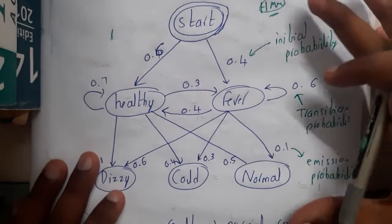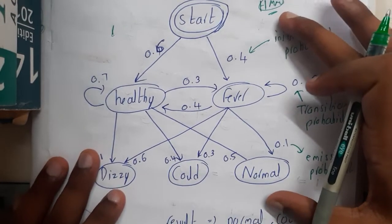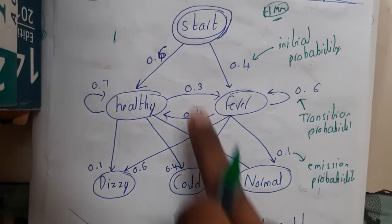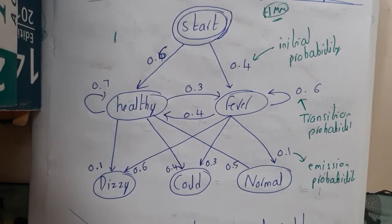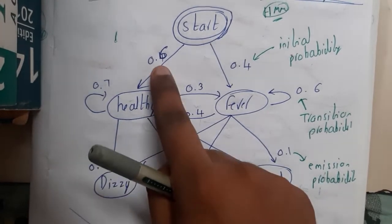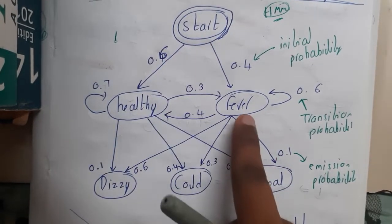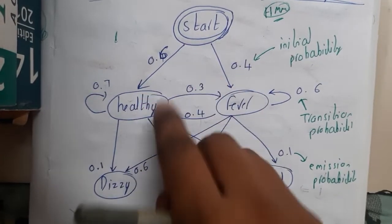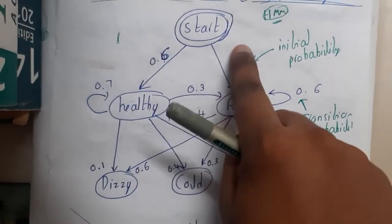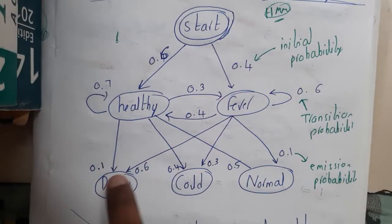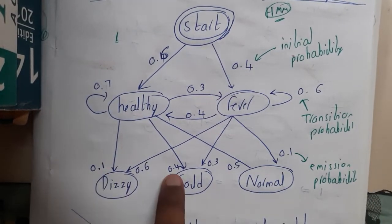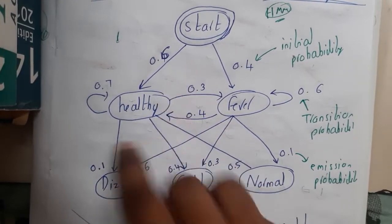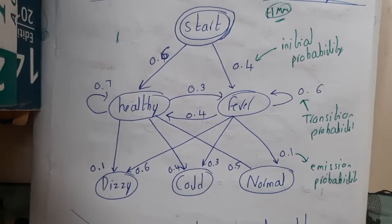They will give you a flow chart — you can call it a state chart diagram. It will have some probabilities. From Start to Healthy the probability is 0.6, and from Start to Fever it is 0.4. The total of all outgoing probabilities always equals one — for example, at Healthy: 0.1 + 0.4 + 0.5 = 1.